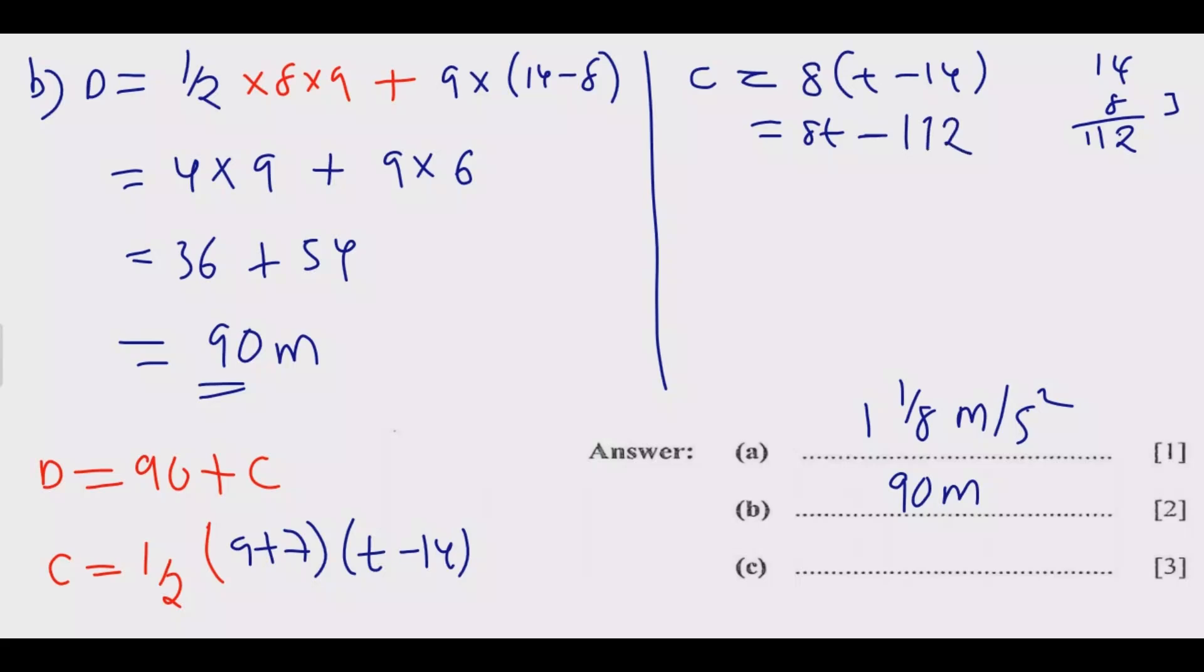Now this is the area under C. So to find D, D is equal to 90, the one that we found in B, then plus C, 8T minus 112. Then this tells me distance is 8T minus 22. Now we know that speed is equal to D over T. So now what do we know? We know what this one is, this one that we found. We know what speed is, we've been given, though we're looking for T.